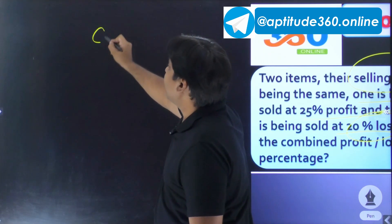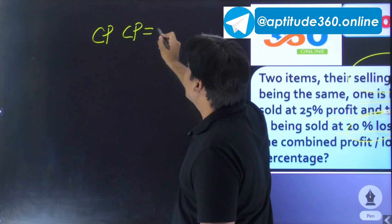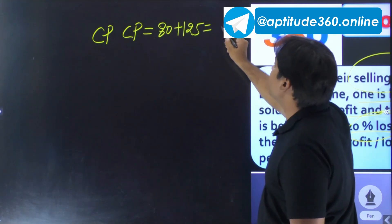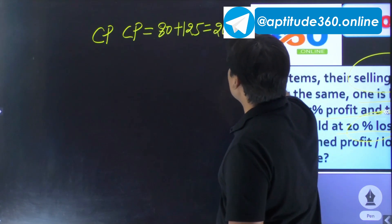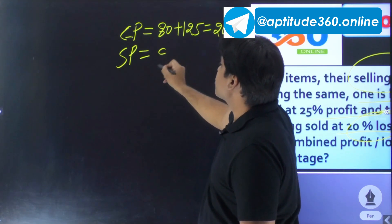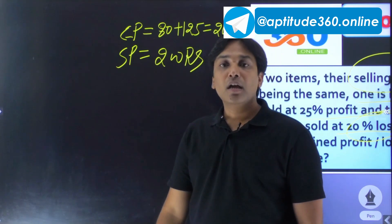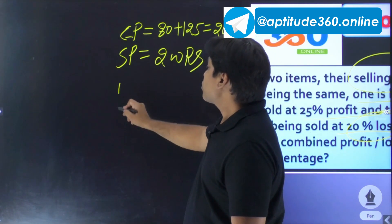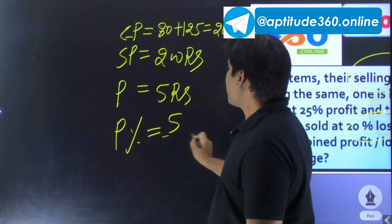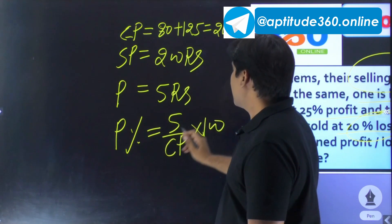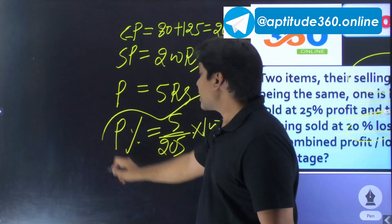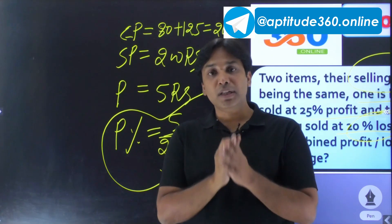The combined CP is 80 plus 125 which is 205 rupees. The combined selling price is 100 plus 100 equals 200 rupees. So there is a loss of 5 rupees. The loss percentage is (5/205) × 100, which gives approximately 2.44% loss.